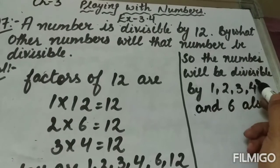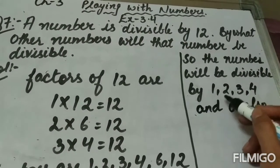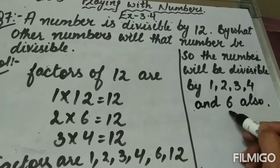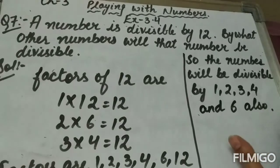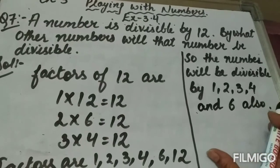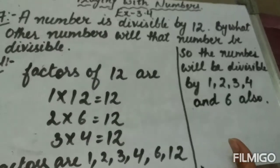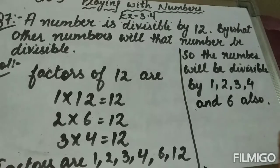So the number will also be divisible by 1, 2, 3, 4, and 6 — that is, it will be divisible by all the factors of 12.